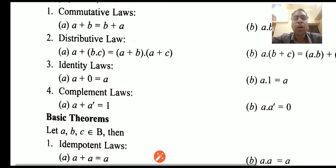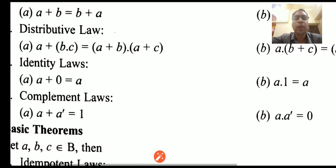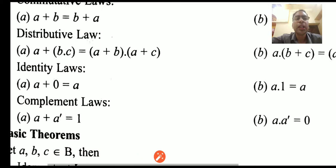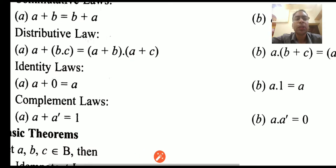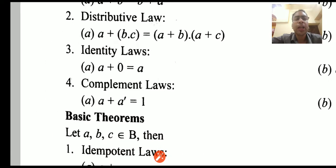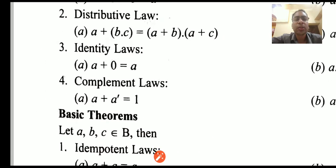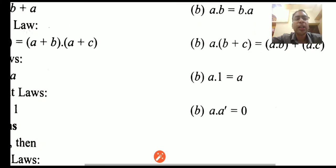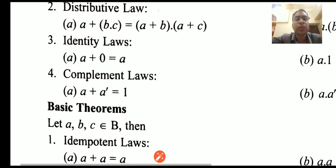Next is the identity law for both operations — for plus as well as for dot. So, a plus 0 is equal to a, and a dot 1 is equal to a. The complement law: a plus a' (the negation of a) is equal to 1, and a dot a' is equal to 0.